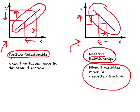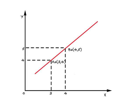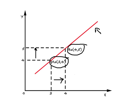Let us revisit the diagram from earlier. We had point A at (3, 4) and point B at (4, 5), and when we join them we get this line. What we find is: when you increase x by one unit from 3 to 4, y also increases by one unit from 4 to 5. This raises the question: by how much does y change when x changes by one unit?